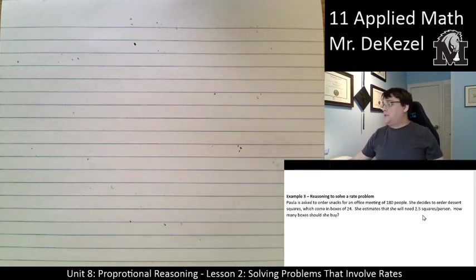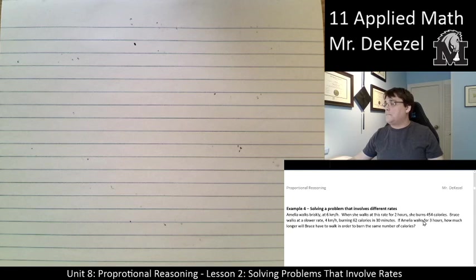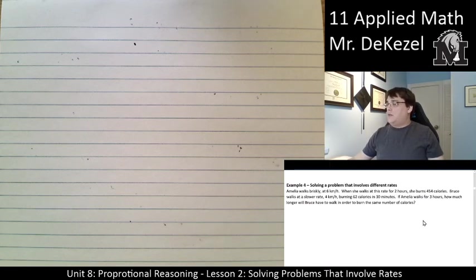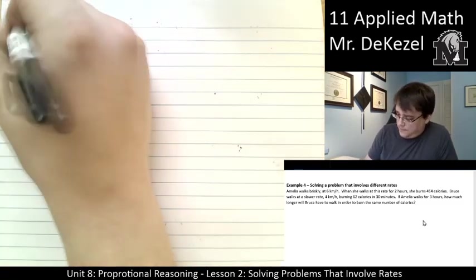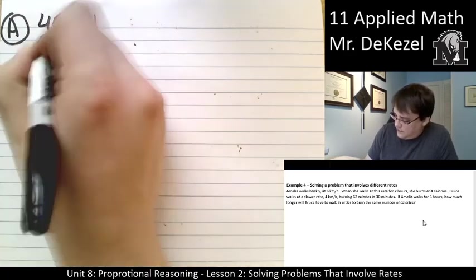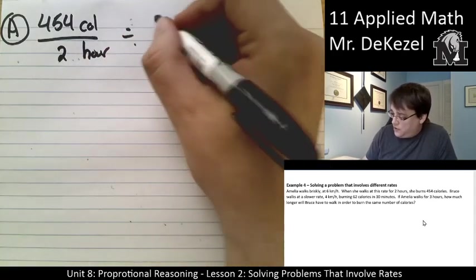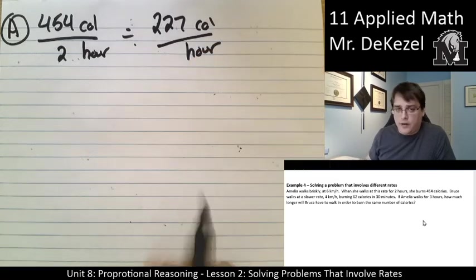Let's see. We have one more problem to do together. Yes, one more. So, for example four. Solving a problem that involves different rates. Amelia walks briskly at 6 kilometers per hour. And when she walks at this rate for two hours, she burns 454 calories. Bruce walks slower, 4 kilometers per hour, burning 62 calories in 30 minutes. If Amelia walks for three hours, how much longer will Bruce have to walk in order to burn the same number of calories? Okay. When I see this, I see different units. I want to make them into a unit rate so I can deal with them easily, all the same.